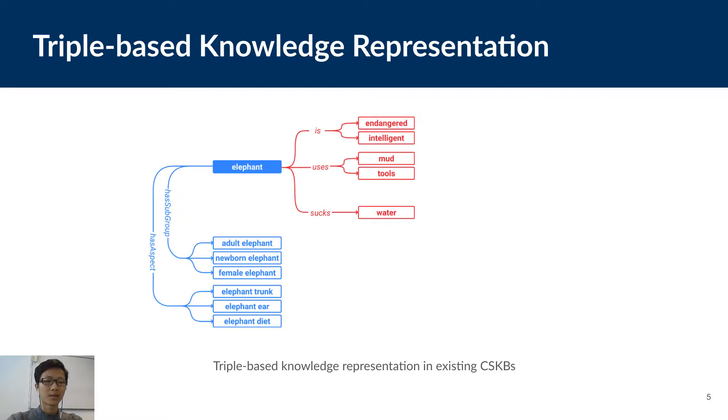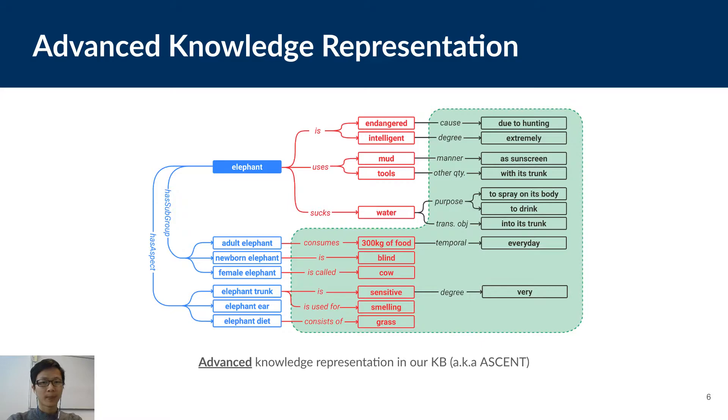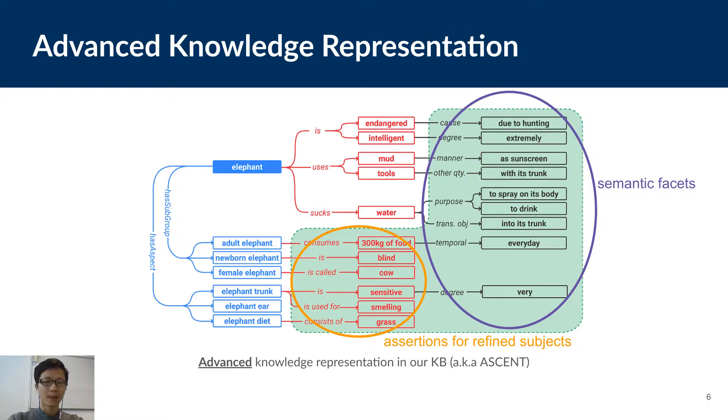So, to give you an example of how our data model is different from existing KBs, let me draw a figure here. Here are some assertions about the concept elephant and existing KBs would stop at this stage. In our KB, we introduce semantic facets to the assertions. We also treat subgroups and aspects as subjects and extract assertions for those refined subjects as well. For example, our KB knows elephant sucking water has two purposes, to spray on their bodies and to drink. For refined subjects, the KB knows elephant trunks are used for smelling and so on. And we name our KB ASCENT.